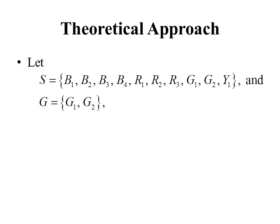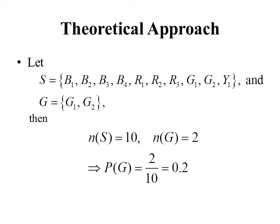Now let's take a theoretical approach. Our sample space S contains elements B1, B2, and so forth — representing each individual cube — giving us 10 elements in our sample space. Because we're randomly choosing a cube, all outcomes are equally likely, so the theoretical approach applies. Let G be the event that we get a green cube. In mathematical notation, G is the set {G1, G2}. So N(S) = 10, N(G) = 2, and the probability of G is 2 over 10, which is 0.2. That's our exact theoretical probability of getting a green cube.